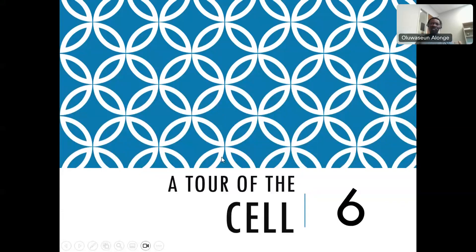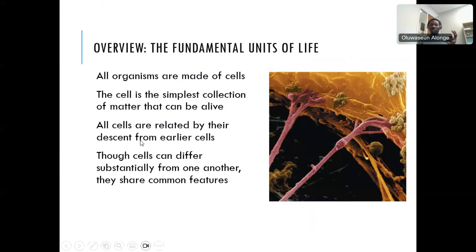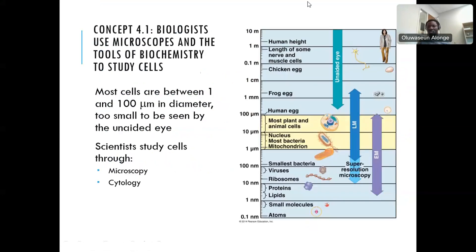Hey, this is Chapter 6, and we'll be looking at the cell. I'm going to be fast and very detailed about this chapter. When you look at organisms, all organisms that we call living organisms are made up of cells. So the cell is the building block of all organisms, and that's why we say the cell is the structural and functional unit of life — the smallest thing that can have the characteristics of life. There are different kinds of cells, and we'll be looking at them as we go.